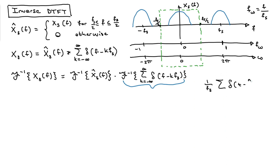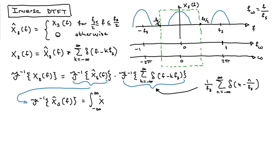That time-domain impulse train is (1/Fs) · Σ δ(t − n/Fs). The other term I need is the inverse Fourier transform of X̂_S(F). The inverse Fourier transform looks very similar to the forward transform — it just has a +2πft exponent — and I integrate over frequency df, since the result should be in the time domain.